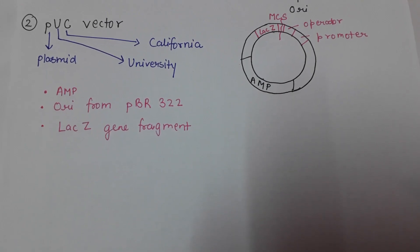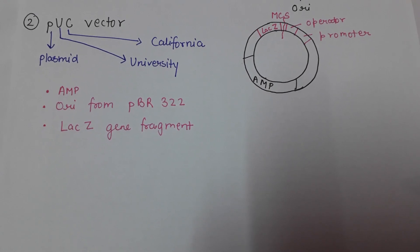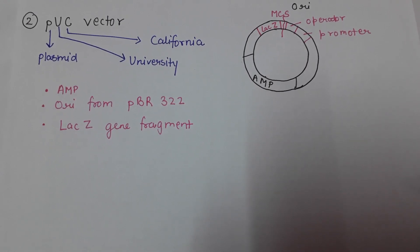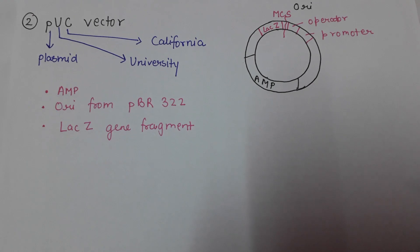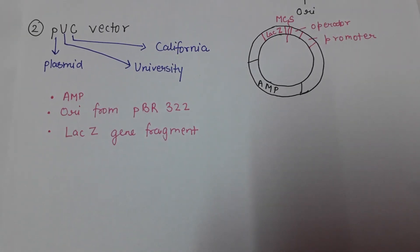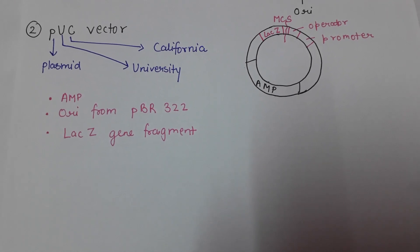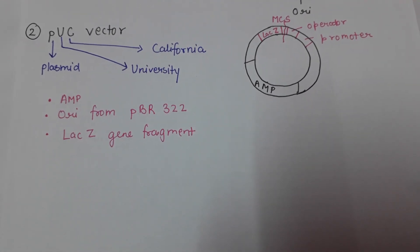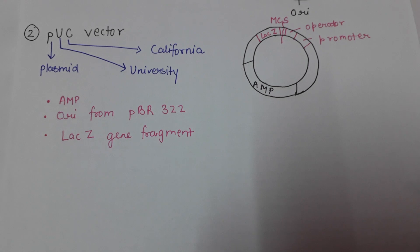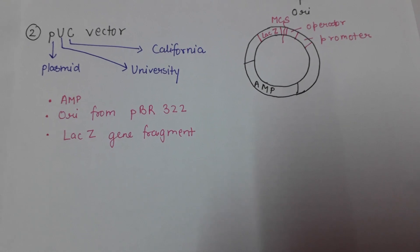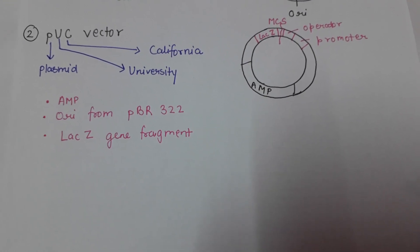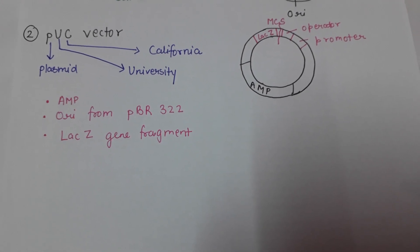A second commonly used plasmid vector is the pUC vector, named for Plasmid University of California, where it was constructed. Its special features include an ampicillin resistance gene, an origin of replication taken from pBR322, and a lacZ gene fragment. This vector can be used in blue-white screening to identify whether our gene of interest contains an insert.